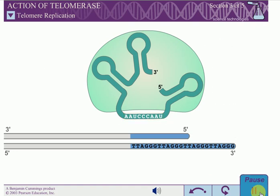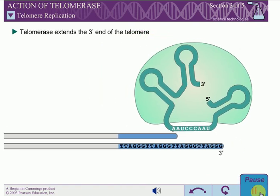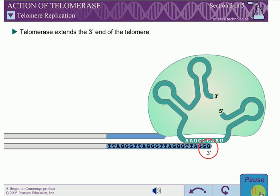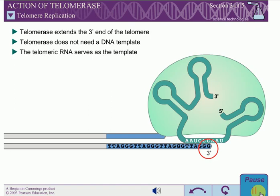Like all other DNA polymerases, telomerase extends the 3' end of its DNA substrate. However, unlike most DNA polymerases, telomerase does not need a DNA template to direct the addition of new nucleotides. Instead, the RNA component of telomerase serves as the template for adding the telomeric sequence to the 3' terminus of the chromosome.